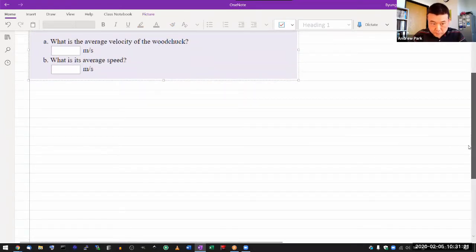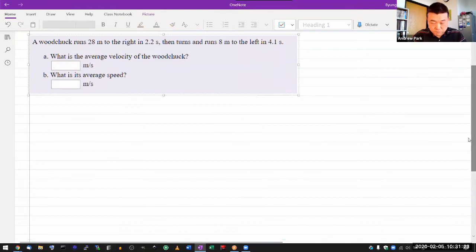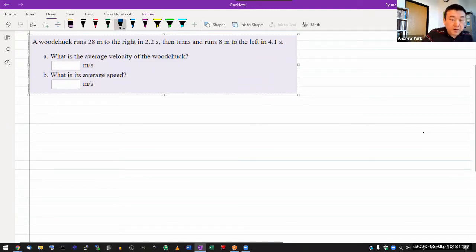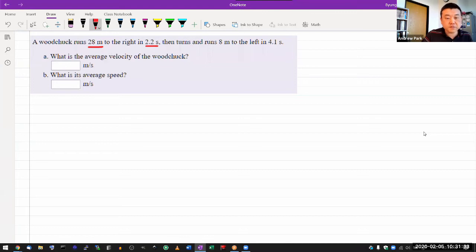Woodchuck runs 28 meters to the right in 2.2 seconds, and then turns and runs 8 meters to the left in 4.1 seconds. All right.